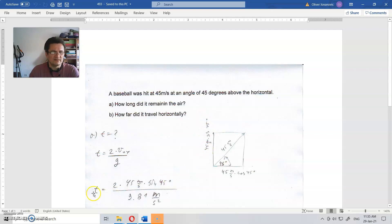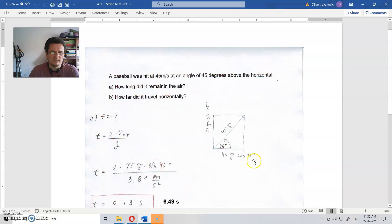And because of that, time of flight is two times this speed divided by this acceleration, and time of flight is 6.49 seconds. That is the time of flight.